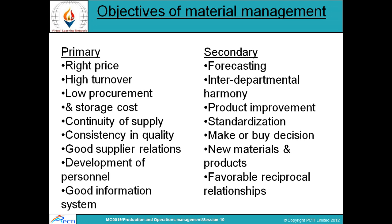Regarding objectives of material management, we can bifurcate them into two heads: primary and secondary. The primary objective — the main concern — is to arrange materials in the right place, achieve high turnover, maintain low procurement and storage cost, ensure supply continuity, consistently assure quality, maintain good supplier relationships, develop personnel, and maintain a good information system regarding materials.